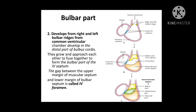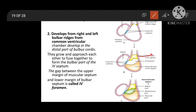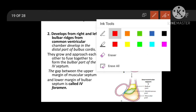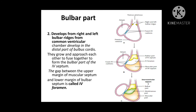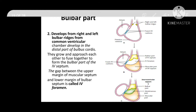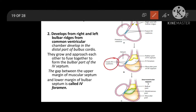Initially there remains a gap between the bulbar septum and the muscular septum, called the interventricular foramen. This gap is later filled by the fused AV cushion or endocardial cushion — shown in bluish — and this part is called the membranous part.